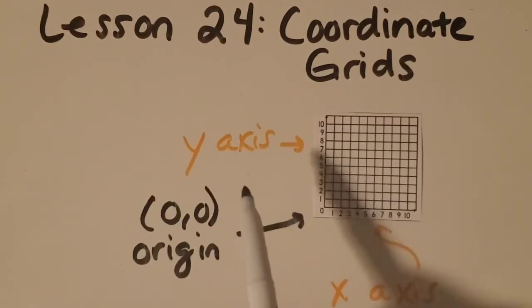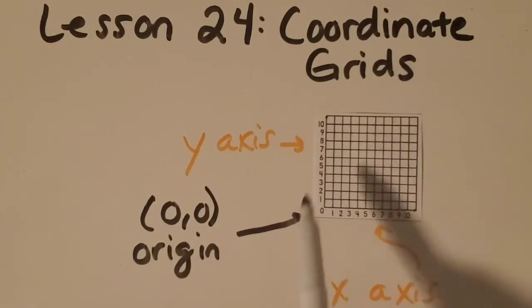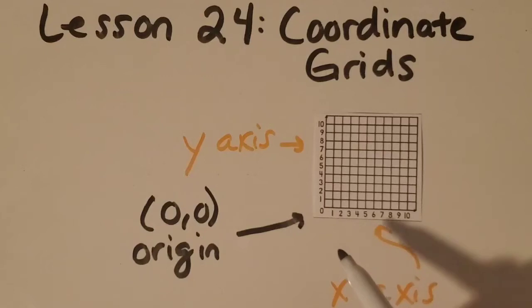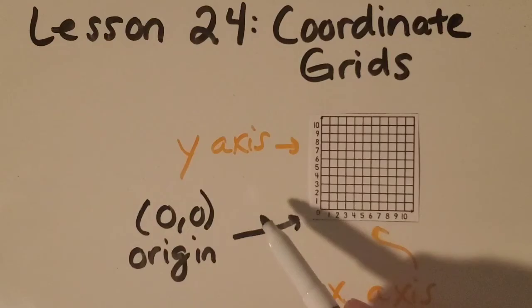All right, so I labeled this example of a coordinate grid with the y-axis, so the vertical number line. The x-axis is the horizontal number line. And then here's one more thing that's really important to understand. The spot right here where it's zero, zero is called the origin. And we need to always, anytime we're plotting a point or putting a point on the grid, we need to start at the origin.